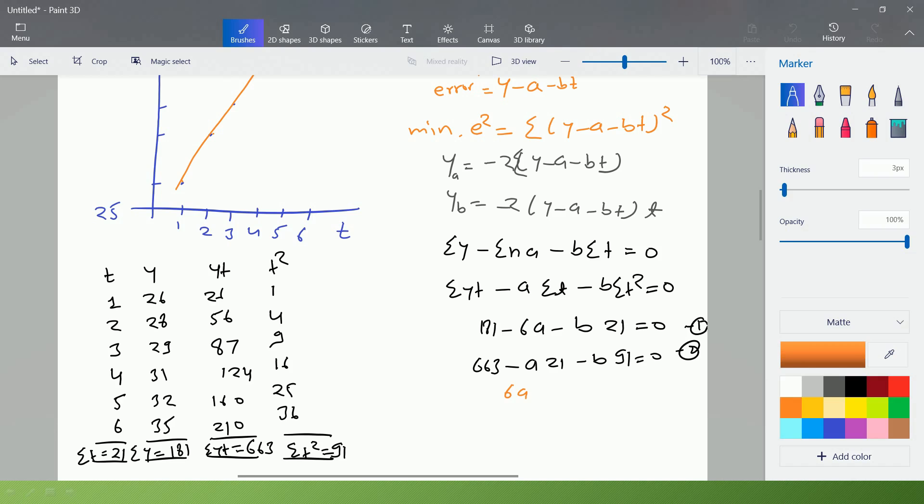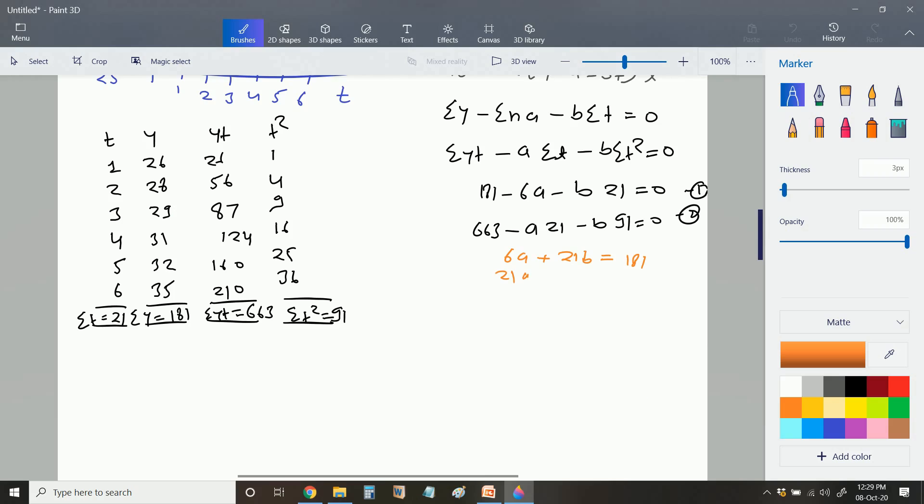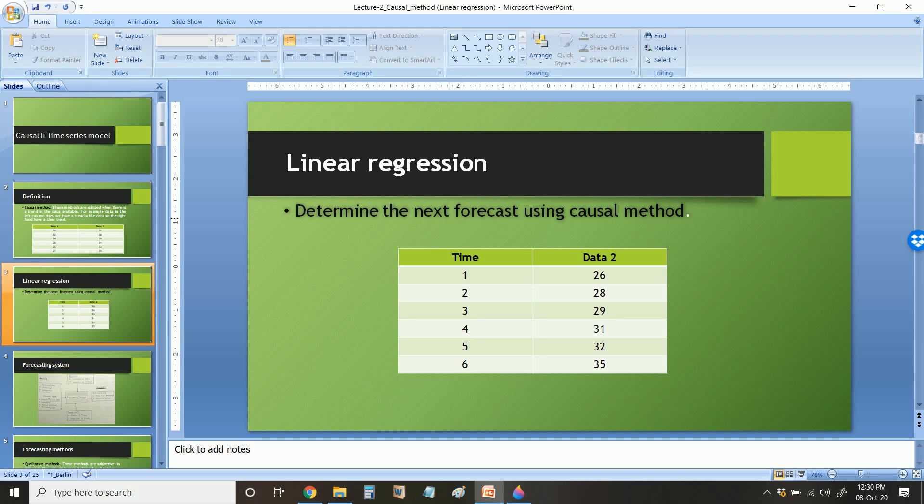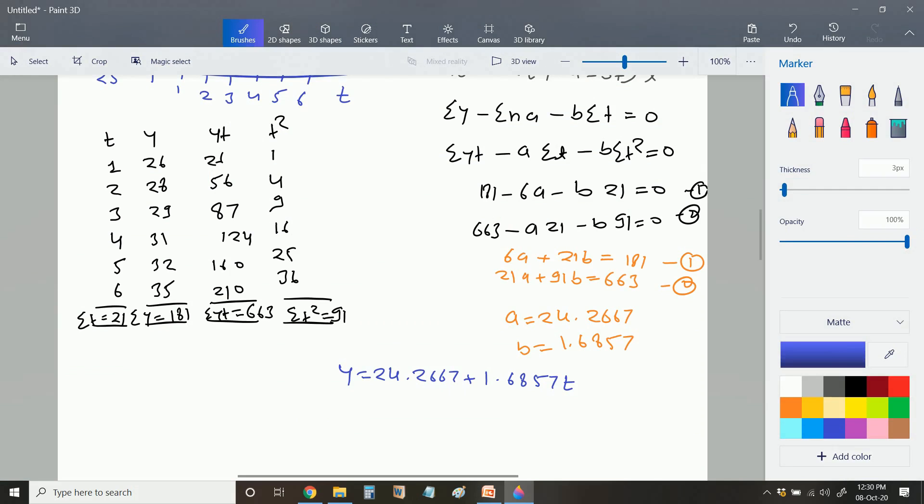To solve these two equations, you will get a as equal to 24.2667 plus 1.6857. I can write y as 24.2667 plus 1.6857t. We have to determine the next forecast. So this we can write as f7 equal to 24.2667 plus 1.6857 multiplied by 7. So this will be equal to 36.067, which is 7.